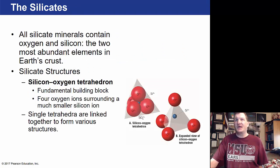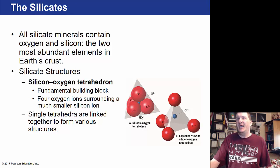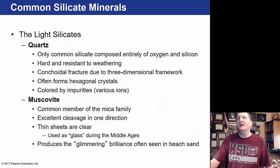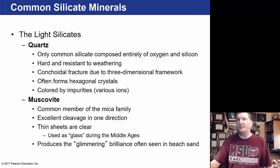A silicate mineral contains oxygen and silicon and is the most abundant in the earth's crust. They have a tetrahedron structure — the fundamental building block where four oxygen ions surround a much smaller silicon ion. Single tetrahedra are linked together to form various structures. Light silicates include quartz, which is mainly oxygen and silicon, hard and resistant to weathering — they fracture into a three-dimensional framework and often have hexagonal crystals colored by impurities.